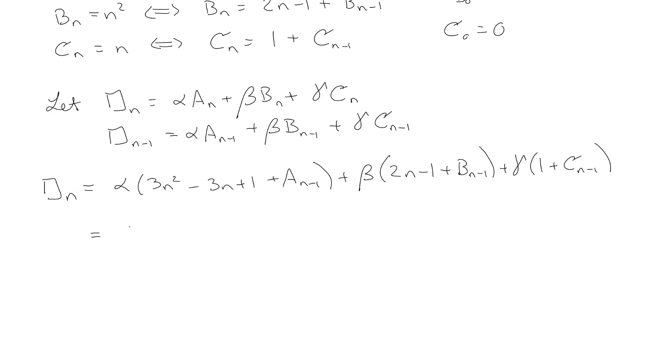I'm going to combine the terms, so we've got 3 alpha n squared and combine the n terms so we've got negative 3 alpha n plus 2 beta n, and then alpha minus beta plus gamma, that's your constant term, and then we have all the other recursive parts of the thing over here.